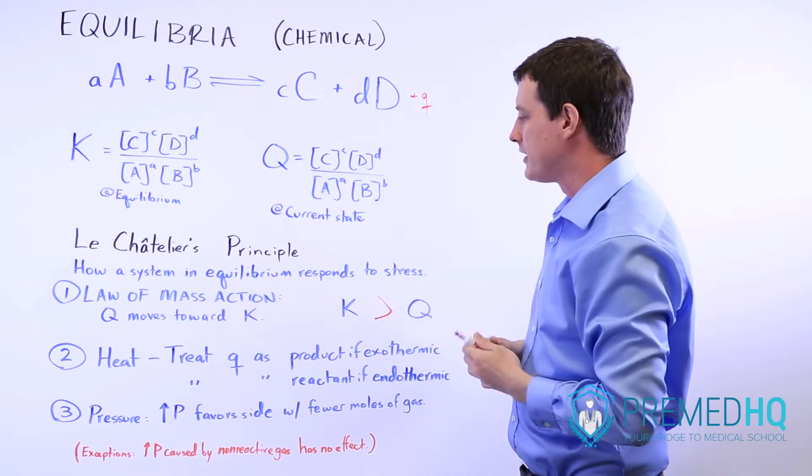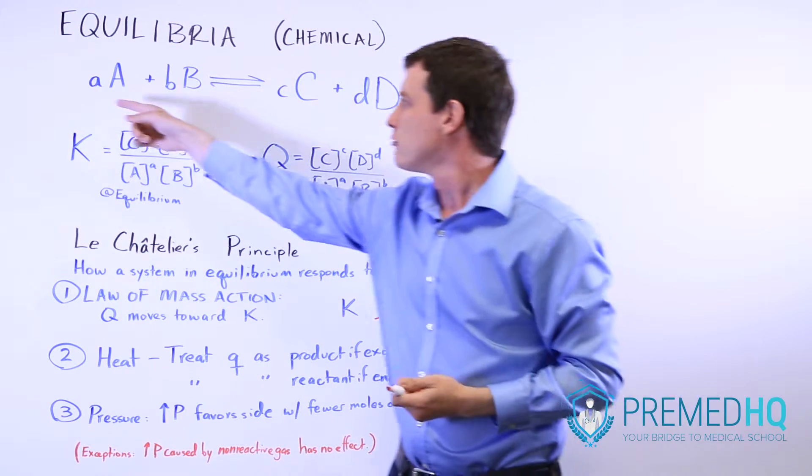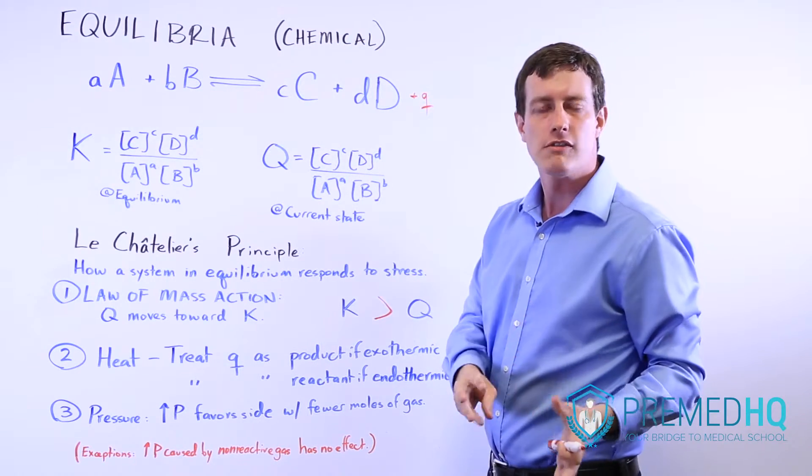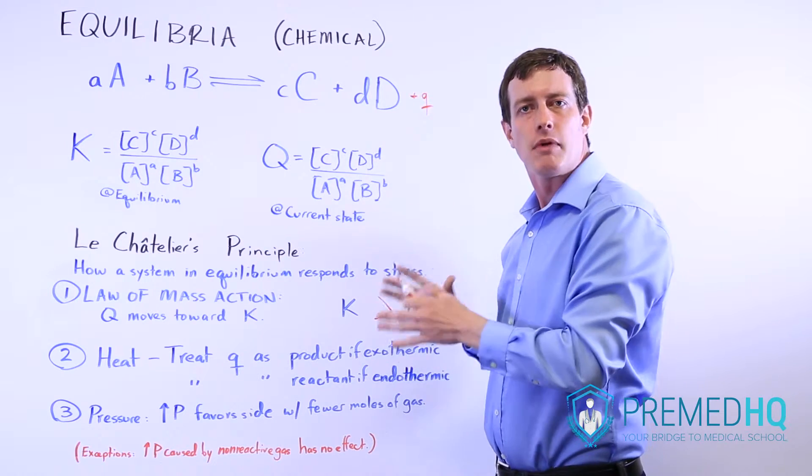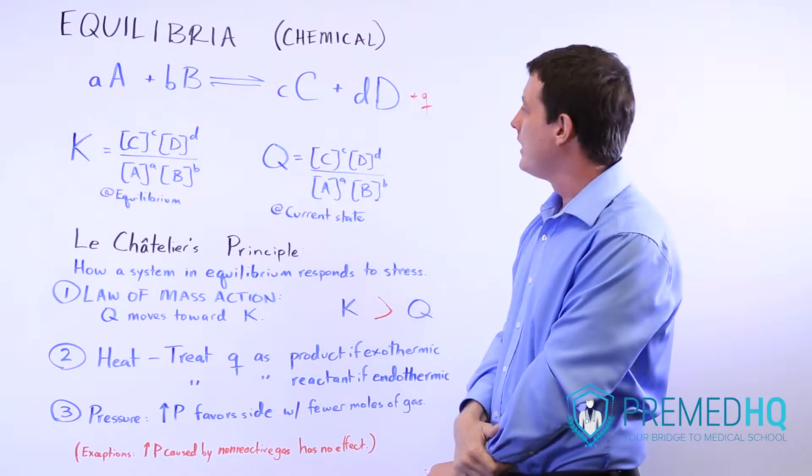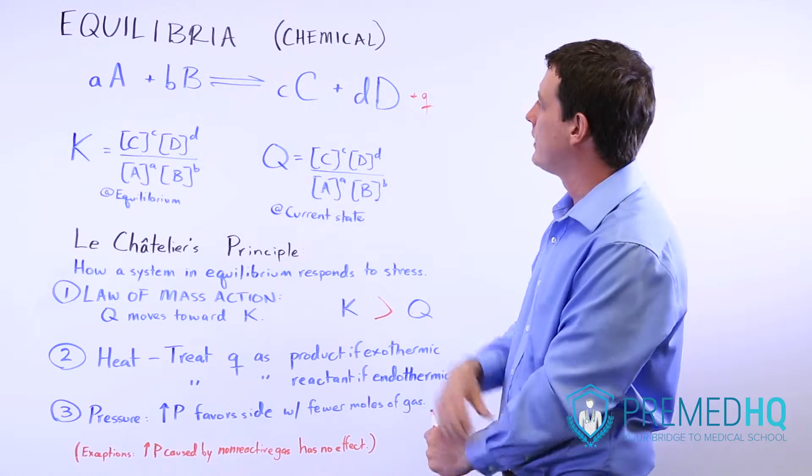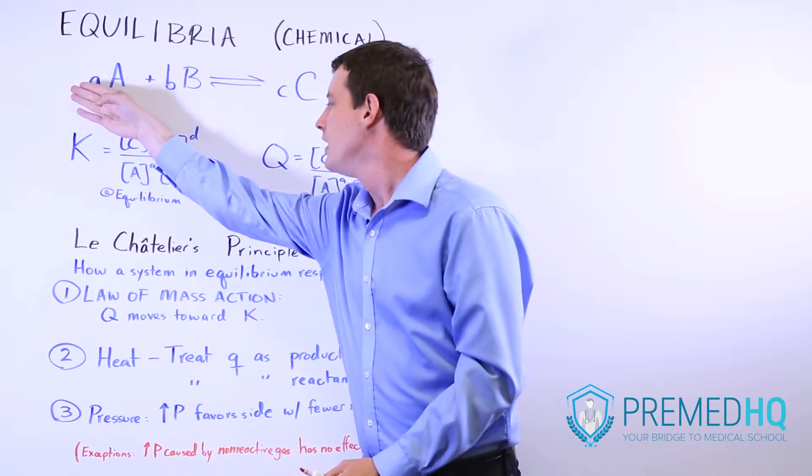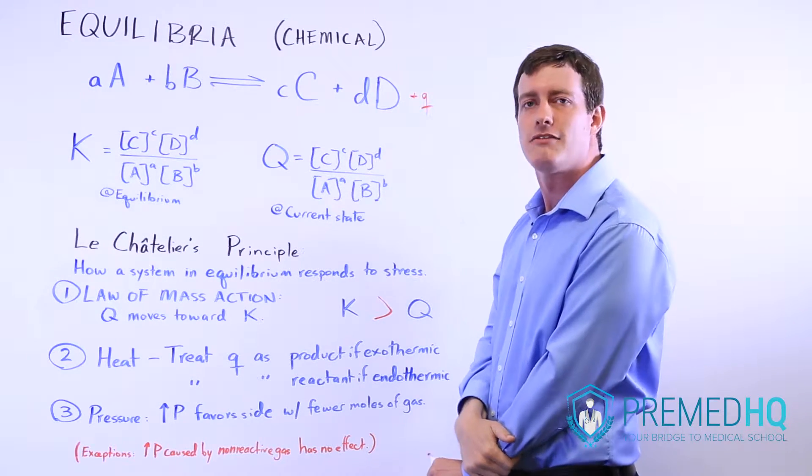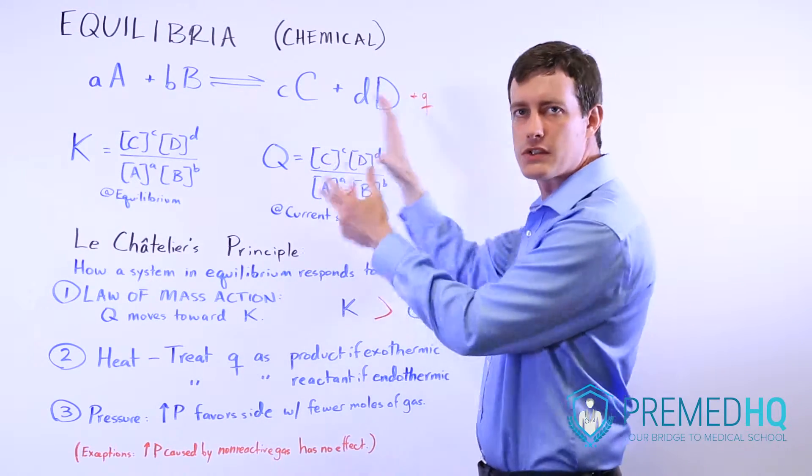And similarly, if it's an endothermic reaction, then you treat heat as a reactant over here. And so if you move to a cooler environment or an environment with more heat energy with a higher temperature, for example, then you will see similar responses. It will be either increasing the amount of a reactant or of a product. And that has an effect on Le Chatelier's principle and where the equilibrium system will move.